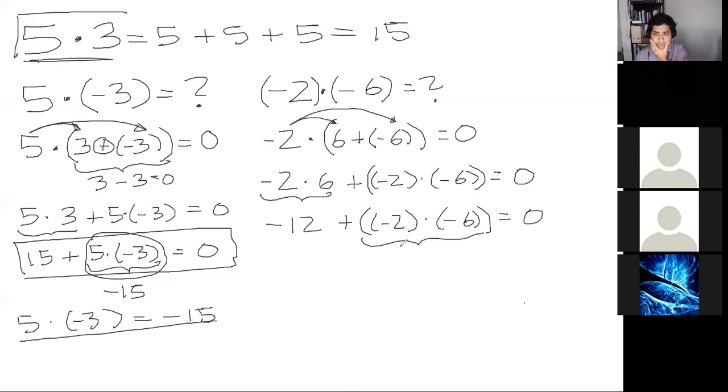Which number must this entire thing equal? You can either say it out loud or write it in the chat. So minus 12 plus what number is equal to zero? 12. Correct. So this thing here must equal positive 12. So that means then let's go like this. must equal positive 12. And there you go. Proof is done.